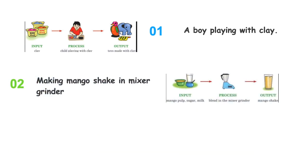The second example is all about making mango shake in mixer grinder. The input here is mango pulp, sugar, and milk. The process we will apply here is blend it in the mixer grinder, and finally we will get the output which is a mango shake.